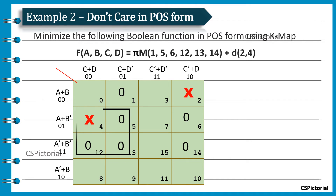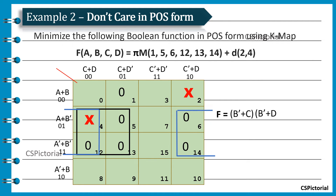We get this quad only after involving the don't care cell. This group points to the terms A plus B bar, A bar plus B bar, C plus D, and C plus D bar. Here, A, A bar and D, D bar get cancelled, leaving the term B bar plus C in the final simplified expression. Similarly, we get the second quad after involving the don't care cells and also wrapping around the table. This group gives B bar plus D in the final expression.